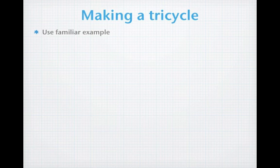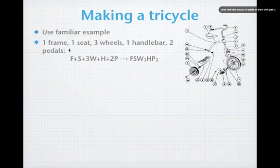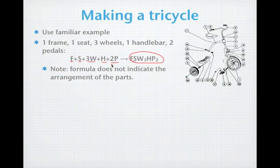Let's start off by using a familiar example. Everybody knows what a tricycle looks like. Here's our tricycle. In the typical tricycle, we have several important parts. We have a frame, which we're going to denote by an F. We have a seat, we need three wheels, one handlebar, and two pedals. And together, they come together to make our tricycle denoted by FSW3HP2. Note that the formula does not indicate the arrangement of the parts.